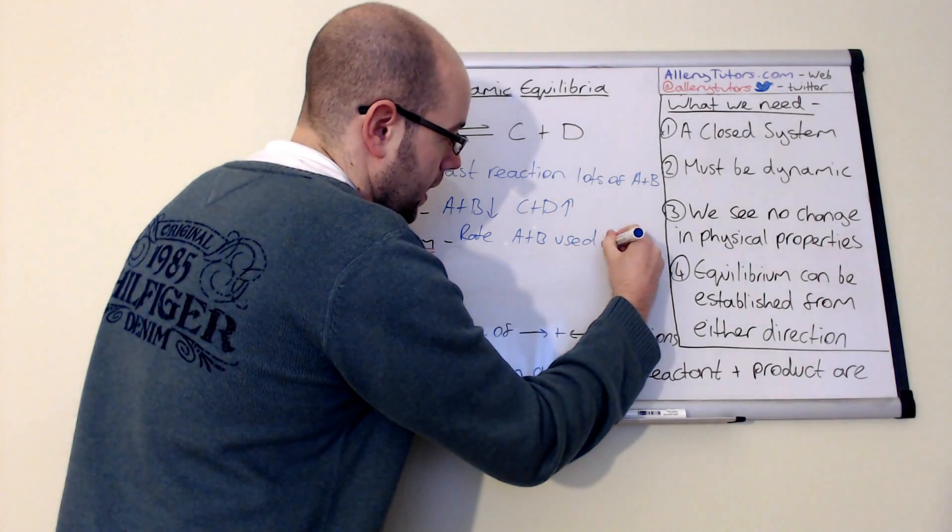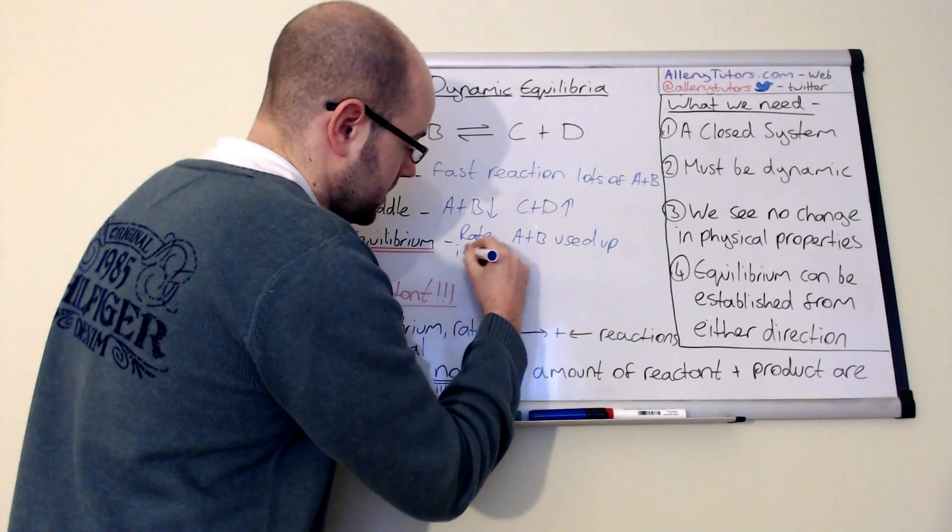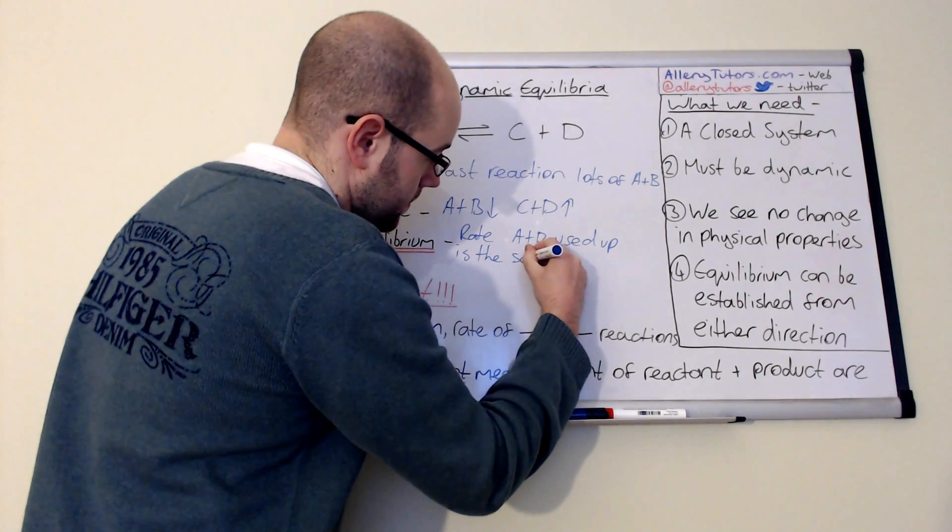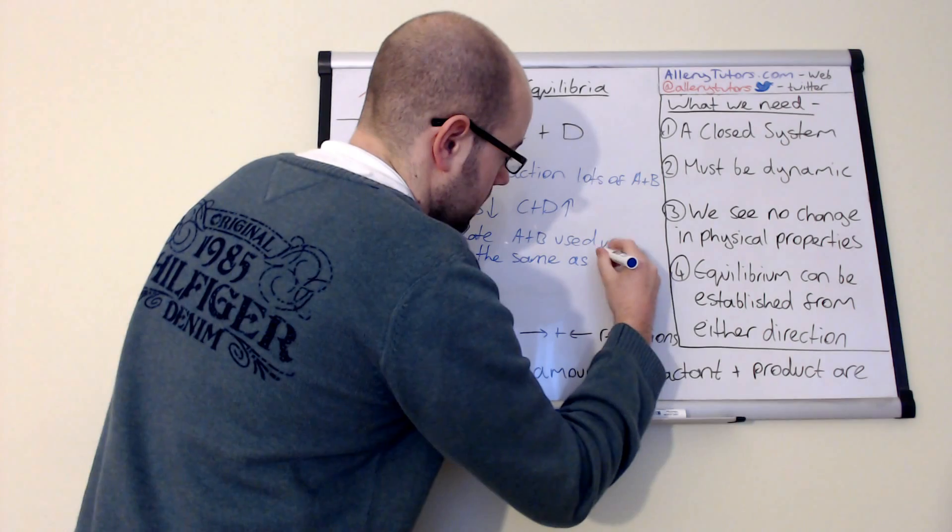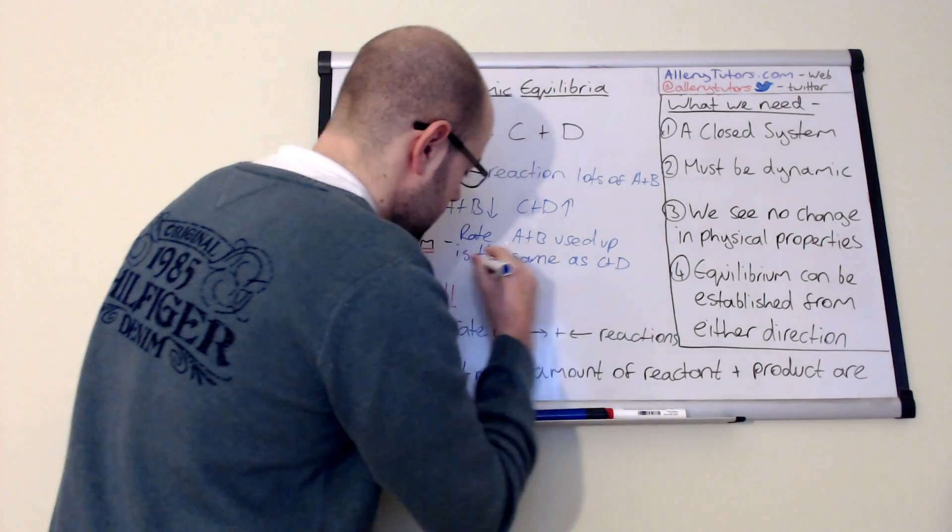So I'll put that there. The rate at which A and B is used up is the same as C and D being used up.